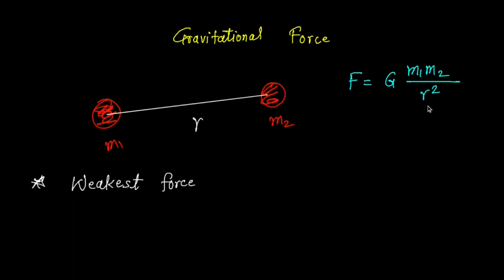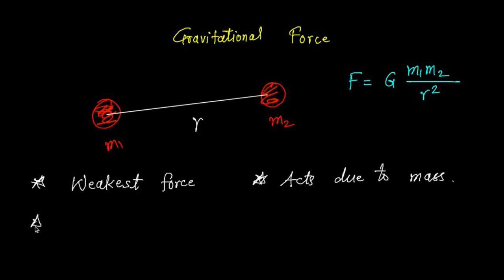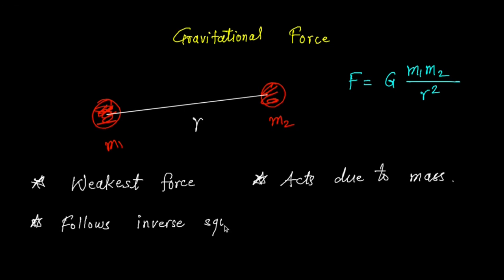This force acts due to the masses of the objects. If objects didn't have any mass, the force between them would be zero. The next property is that it follows an inverse square law. This force is inversely proportional to r squared, so as r increases the force decreases, and as r decreases the force increases.